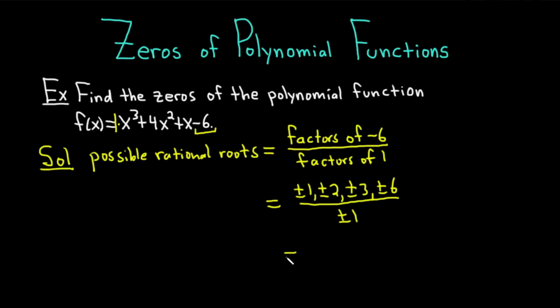So this is equal to, now you can just divide 1 over 1 is 1, so you get ±1. 2 over 1 is 2, so you get ±2. 3 over 1 is 3, so you get ±3. And 6 over 1 is 6, so you get ±6. These would be the possible rational roots.